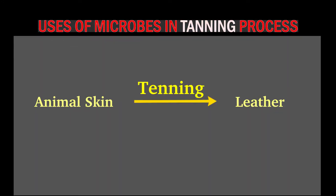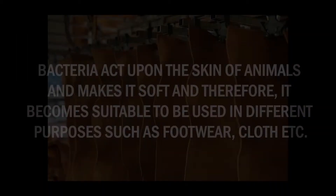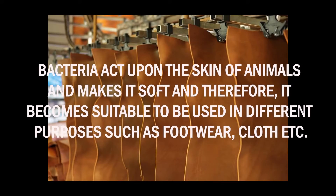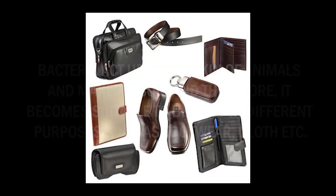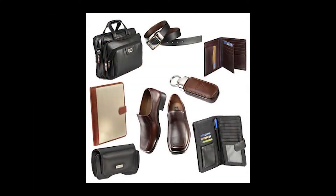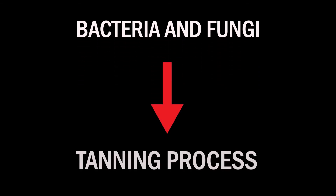Uses of microbes in tanning process. Tanning is the process of treating skins of animals to produce leather. Bacteria act upon the skin of animals and make it soft, and therefore it becomes suitable to be used for different purposes such as footwear, cloth, etc. Bacteria and fungi microorganisms are used in the tanning process.